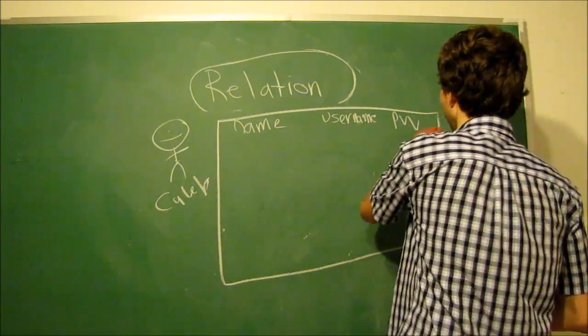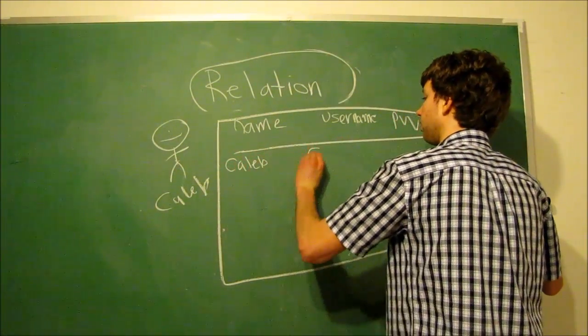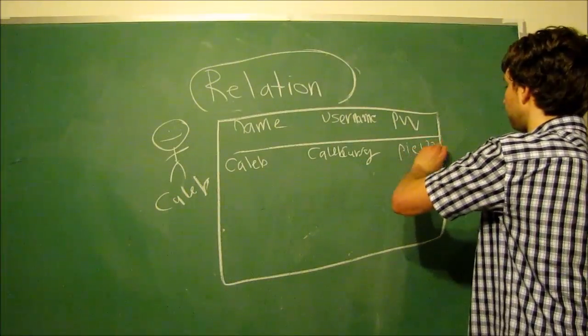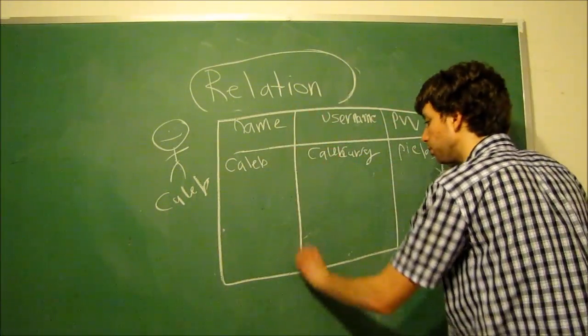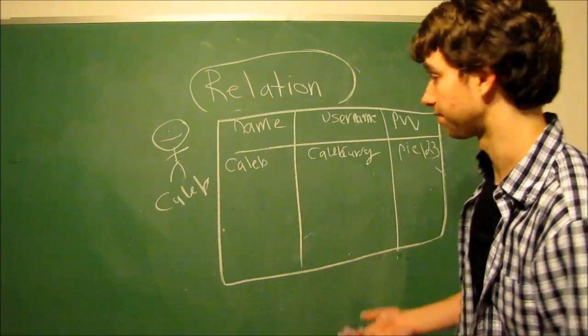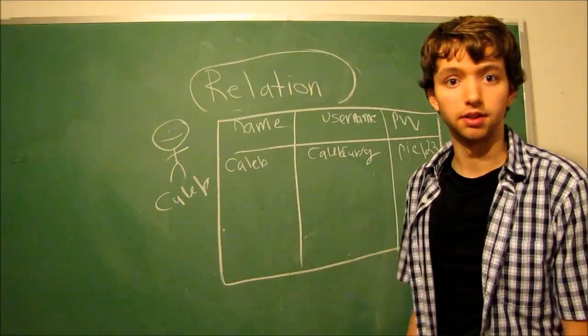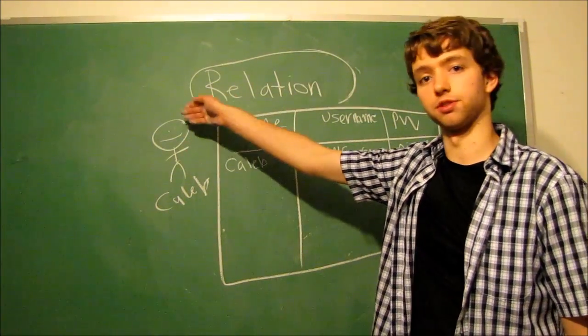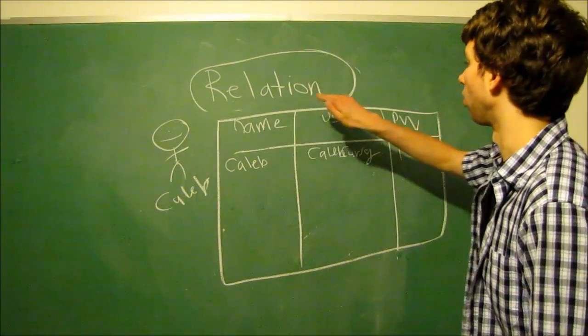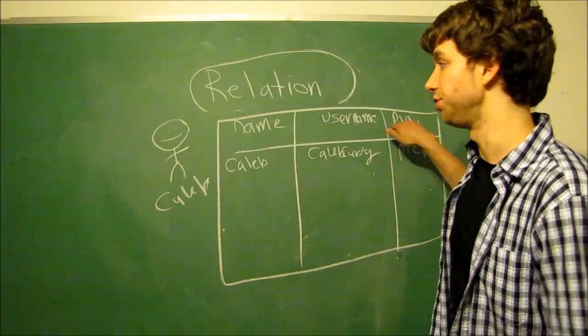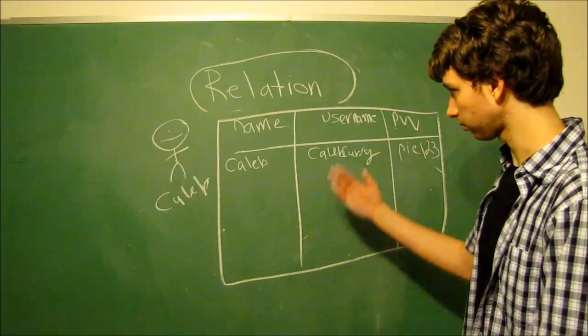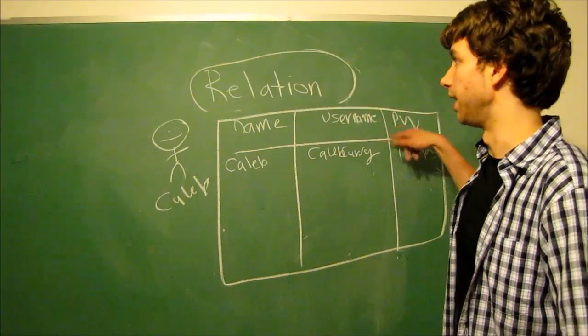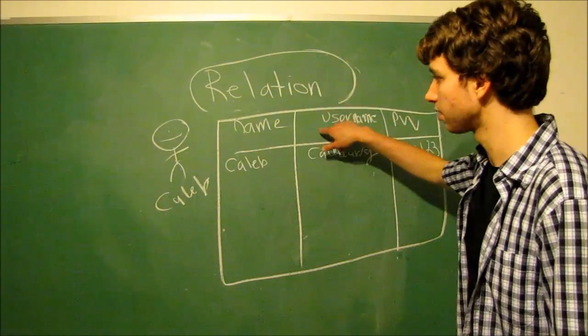So we take his name, Caleb. We take his username, Caleb Curry. We take his password, Pi 1, 2, 3. We kind of get this table concept. It almost looks like a spreadsheet that we talked about in the last video. Although it is slightly different, and we'll be talking about that as time goes on. Now, this guy is the entity that we're storing information about. These are the attributes that we need to store about this person or any other person. So we enter specific values for each one of these attributes to make the relation between the attributes and the entity.